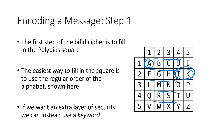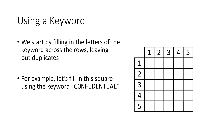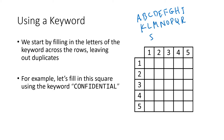For an extra layer of security, we can use a keyword to fill in the square rather than just the alphabet in order. For example, let's say we wanted to use the keyword 'confidential.' I'll write out the alphabet on the side to keep track of which letters I've used. We're skipping over J. Starting in the upper left-hand corner, I'm going to write out the letters of the word 'confidential,' never using the same letter twice.